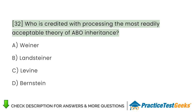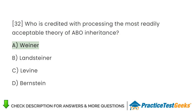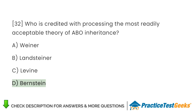Who is credited with processing the most readily acceptable theory of ABO inheritance? A. Wiener. B. Landsteiner. C. Levine. D. Bernstein.